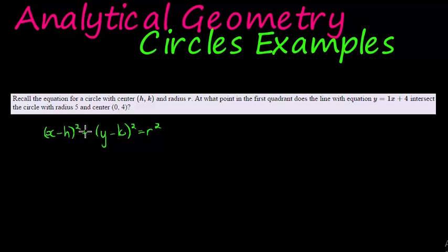Our center is (0, 4), which means that our h is 0. So it's (x - 0)² plus, and our y is (y - 4)², equals 25, because r² is 5².